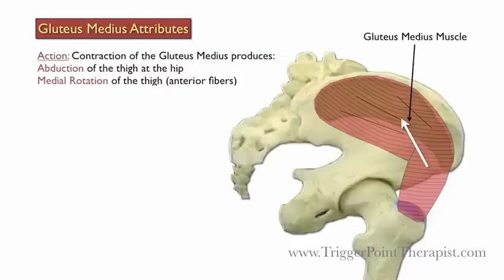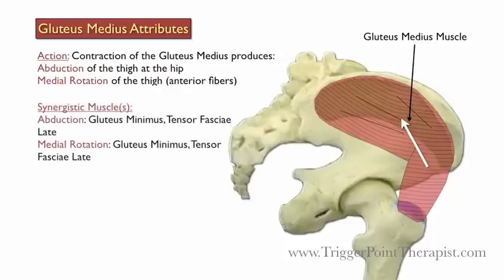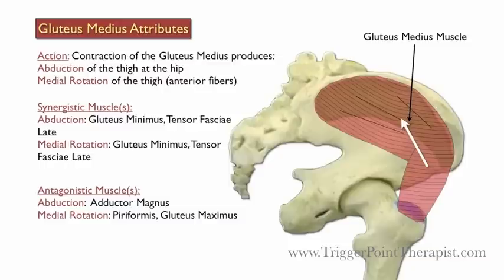Contraction of the gluteus medius muscle produces abduction of the thigh at the hip and medial rotation of the thigh by its anterior fibers. The gluteus minimus and tensor fasciae latae are synergistic during abduction, and the gluteus minimus and TFL are synergistic during medial rotation. The adductor magnus opposes the gluteus medius during abduction, and the piriformis and gluteus maximus oppose it during medial rotation.